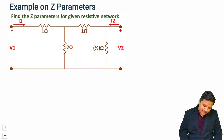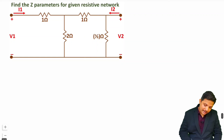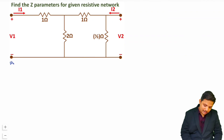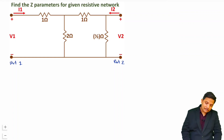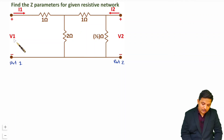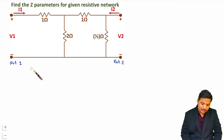Let us see the question. We have a two-port network where this is port 1 and this is port 2, and we are required to find the Z parameters. As I mentioned in my previous video, Z parameters are open-circuit parameters. So when you want to measure Z parameters, you have to keep one port open.